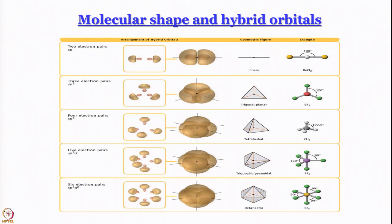Please do not say that BF3 is trigonal planar because it uses SP2 hybridization - it is the other way round. BF3 uses SP2 hybrid orbitals of boron because it has to be trigonal planar, being an AB3 molecule, and that is determined by VSEPR. But perhaps I have also put the cart before the horse a little bit, because out of the blue I started talking about hybridization without telling you what hybridization is.